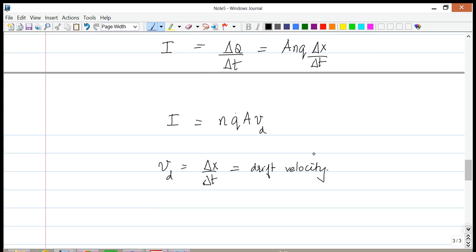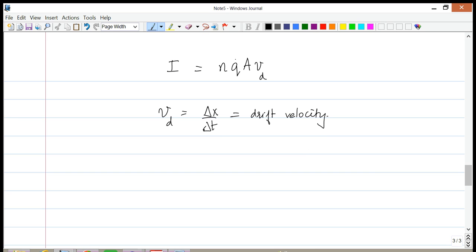This is the effective velocity that the electrons have. Now when there is no potential difference, the drift velocity is going to be zero. But when there is a potential difference, it will start to flow. Understand that the drift velocity is much smaller compared with the actual velocity of the electrons.